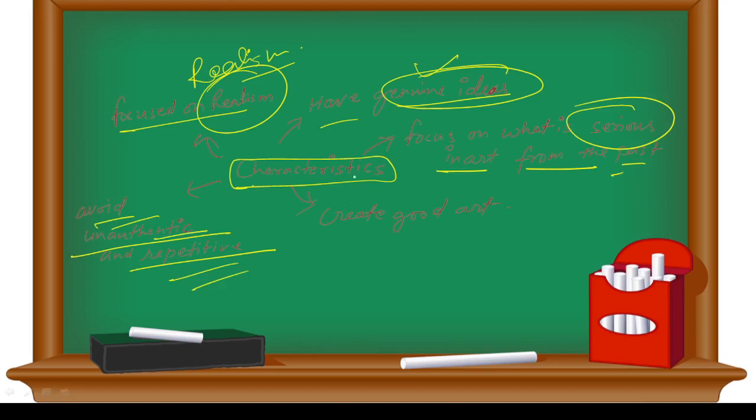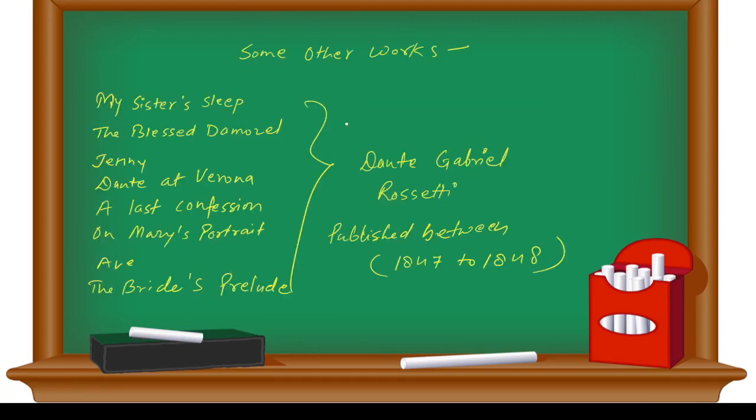Some other works from this movement: My Sister's Sleep, The Blessed Damozel, Jenny, Dante at Verona, A Last Confession, On Marriage, Portrait, Eve of St. Agnes, and Bride's Prelude. These books are by Dante Gabriel Rossetti and got published between 1847 to 1848.